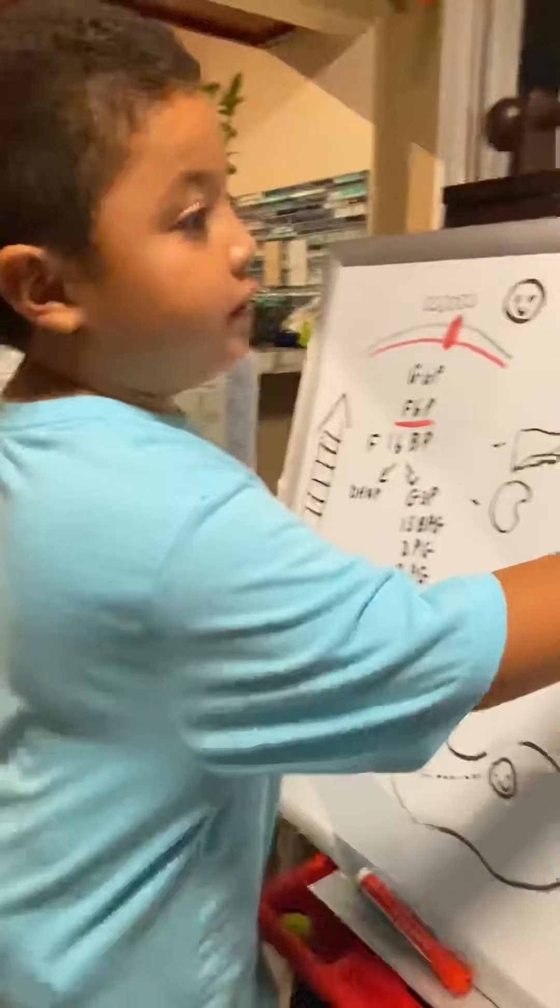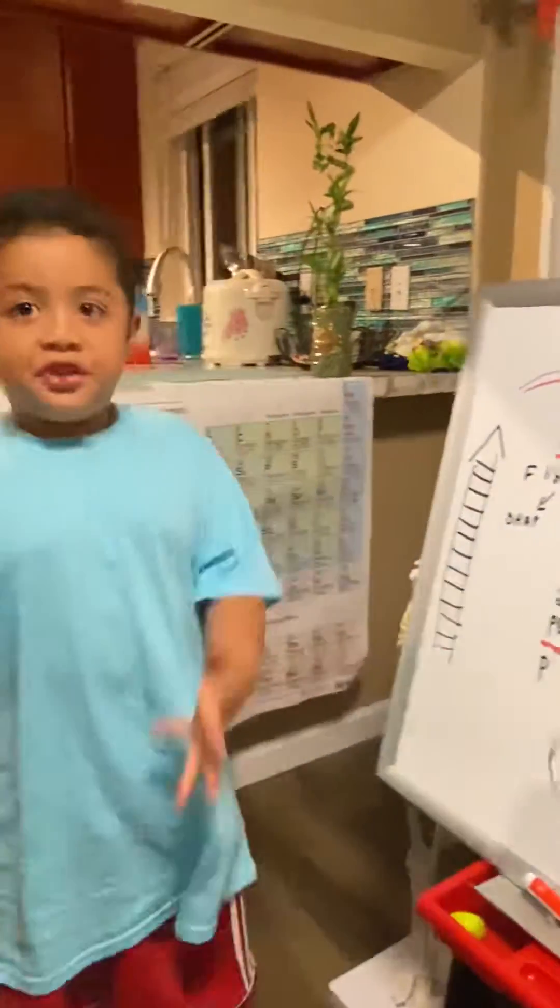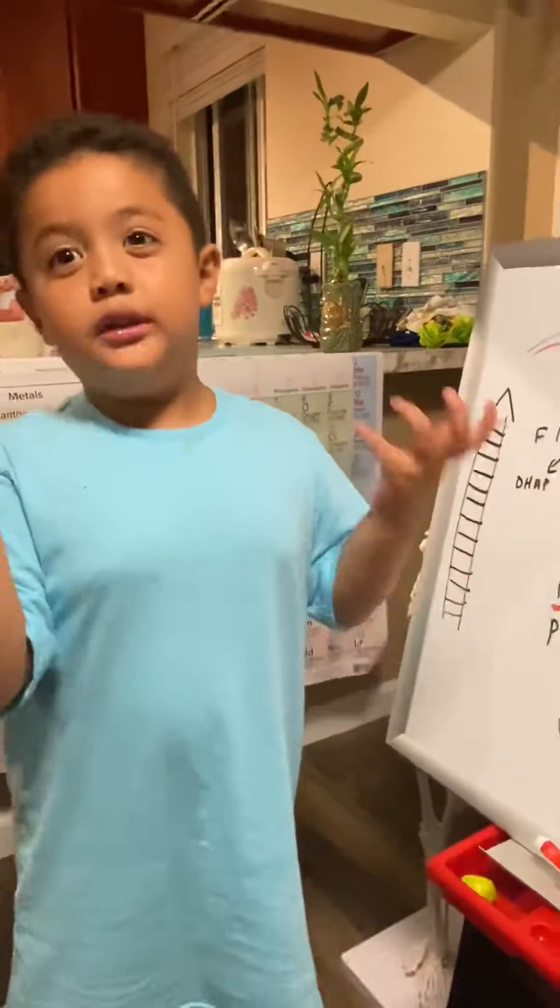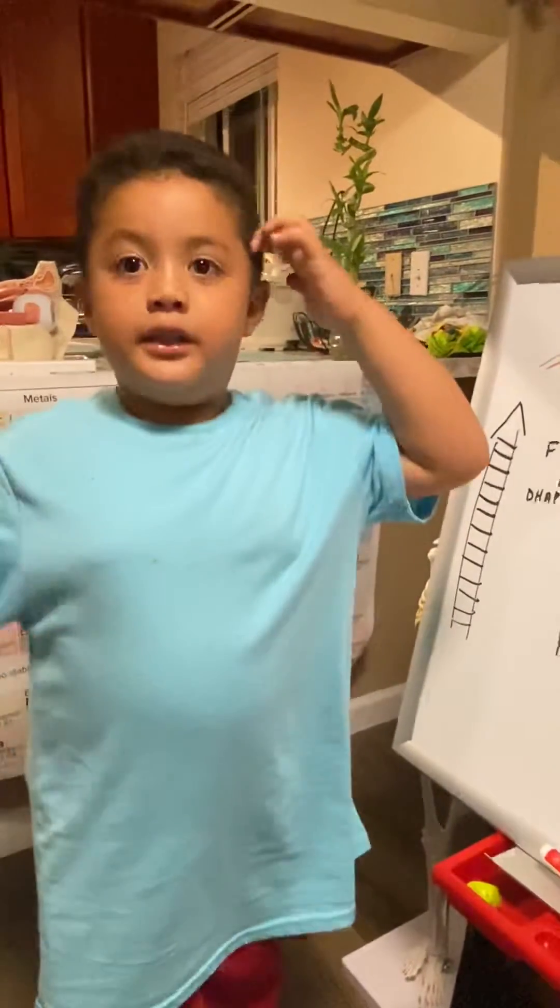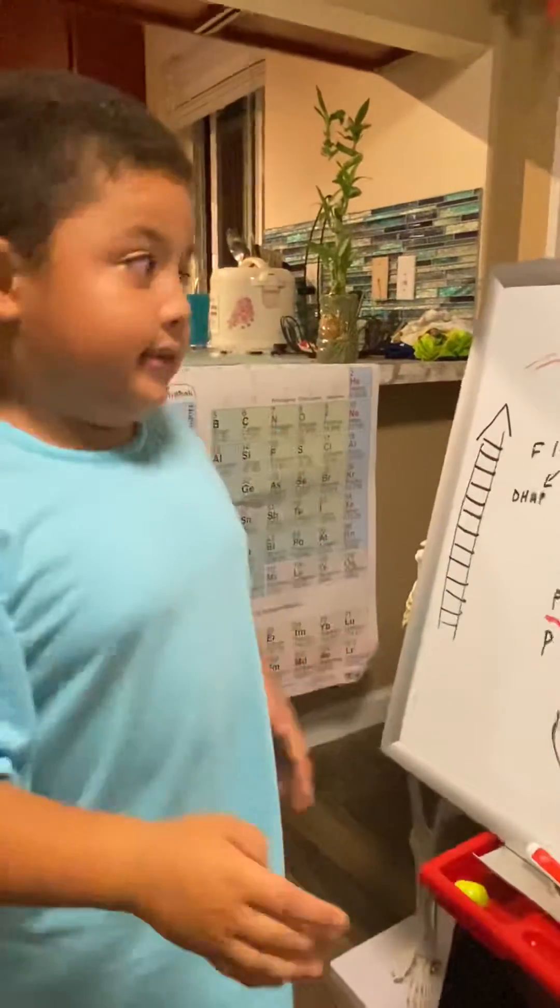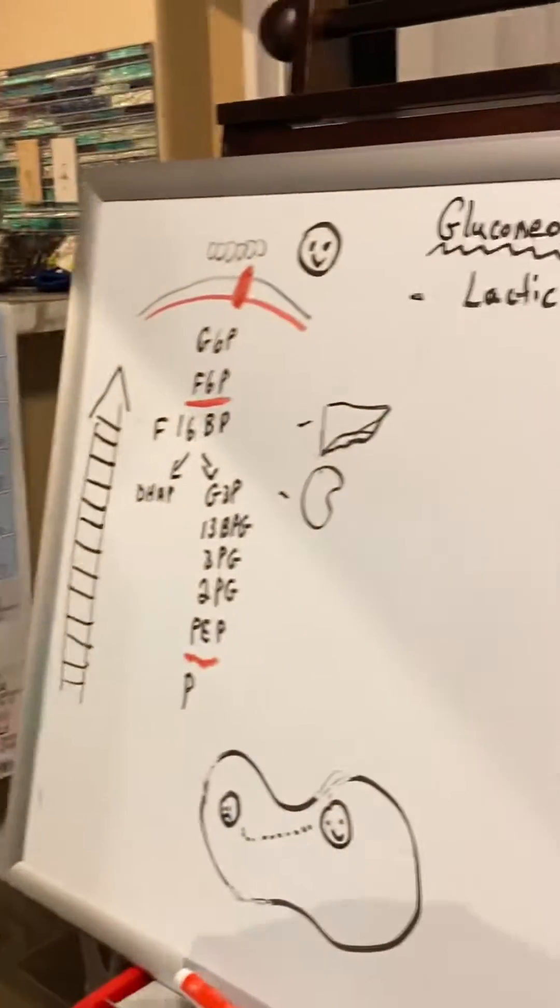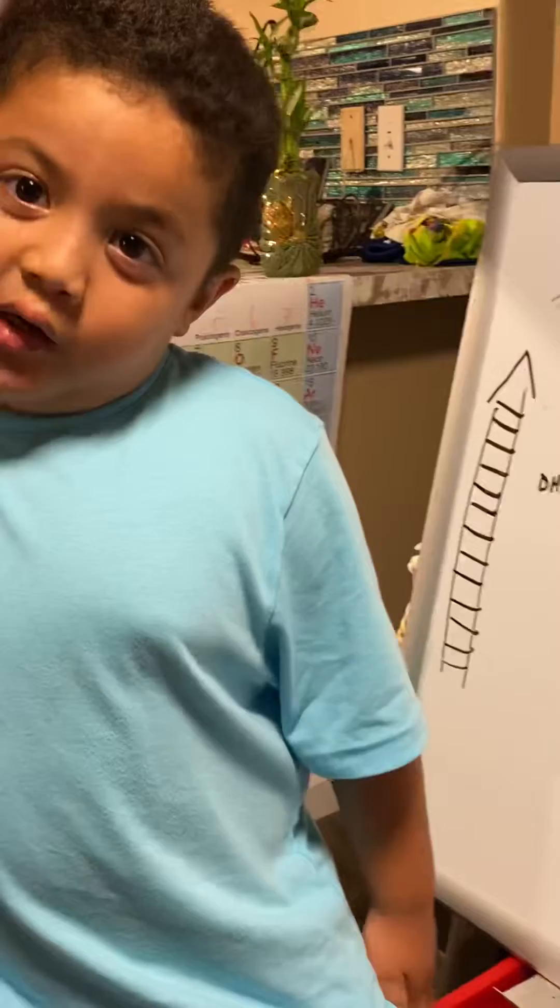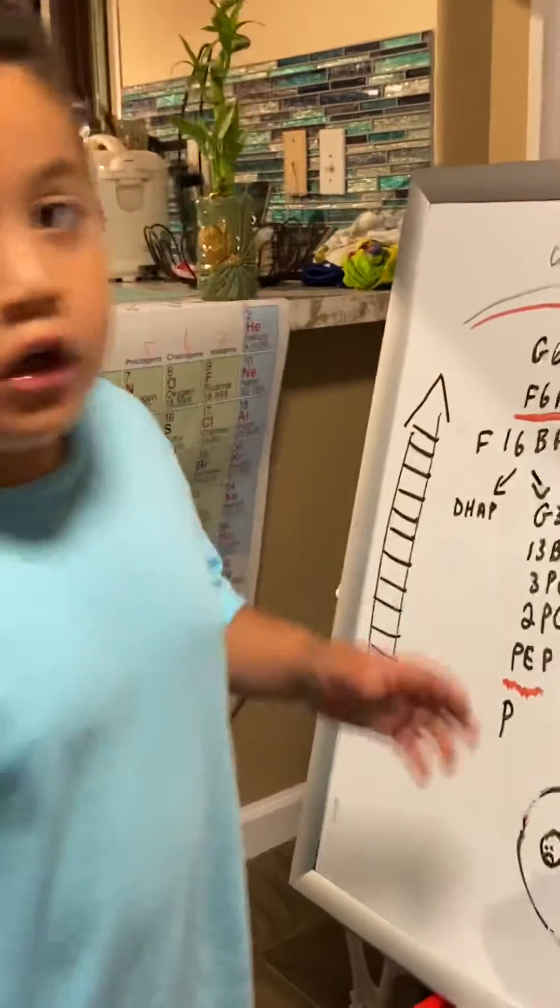So gluconeogenesis is the making of glucose from non-carbohydrate sources. The non-carbohydrate sources are amino acids, glycerol, and lactic acid.